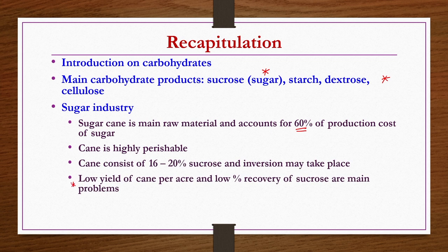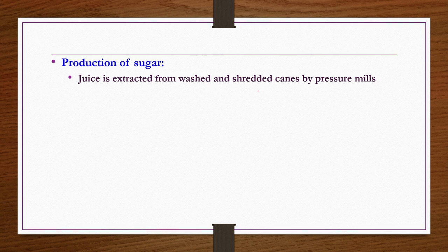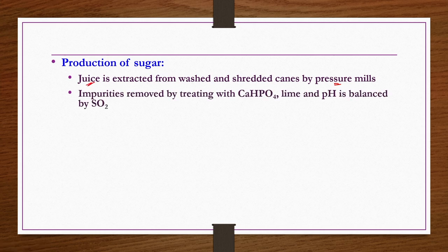Other raw problems of sugar industries are low yield of cane per acre of land as well as low percentage recovery of sucrose from the sugarcane. Plants can be more economical if by-products are also processed properly — for example, bagasse can be used to make insulation boards, or molasses can be used in fermentation industries for the production of ethanol. In the steps involved in production of sugar, juice is extracted from washed and shredded canes by pressure mills. Impurities in this juice are removed in a continuous thickener by adding calcium phosphates, lime, etc., precipitating out the impurities so they can be easily removed from the juice.